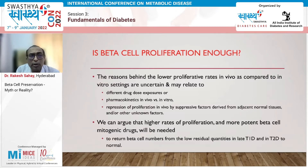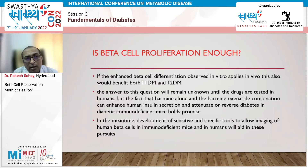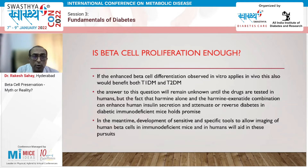How much proliferation is required to bring about real clinical improvement in type 1 and type 2 diabetes? That is still under study. Is beta cell proliferation alone enough to cure type 1 or type 2 diabetes? In type 2 diabetes there may be better scope because the beta cell deficiency is less severe. In type 1 diabetes, the response may be lesser due to more significant deficiency.